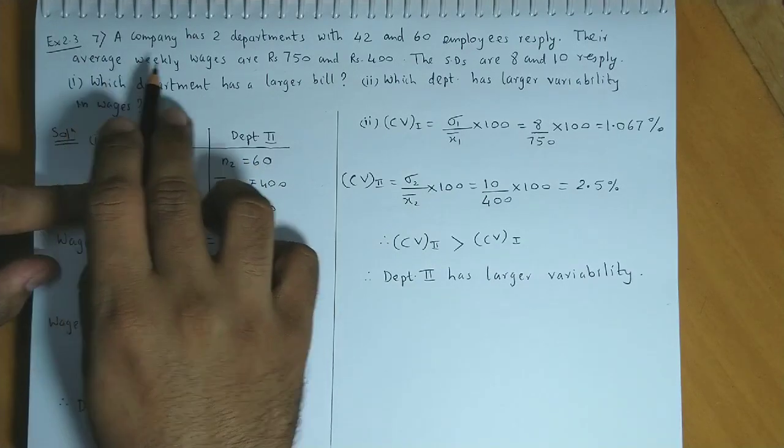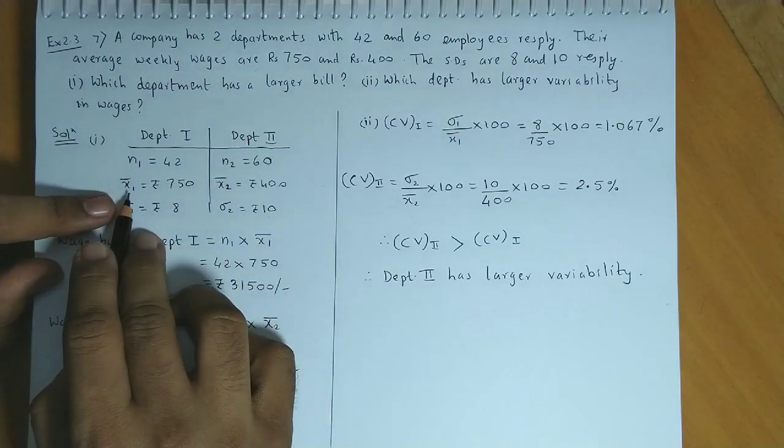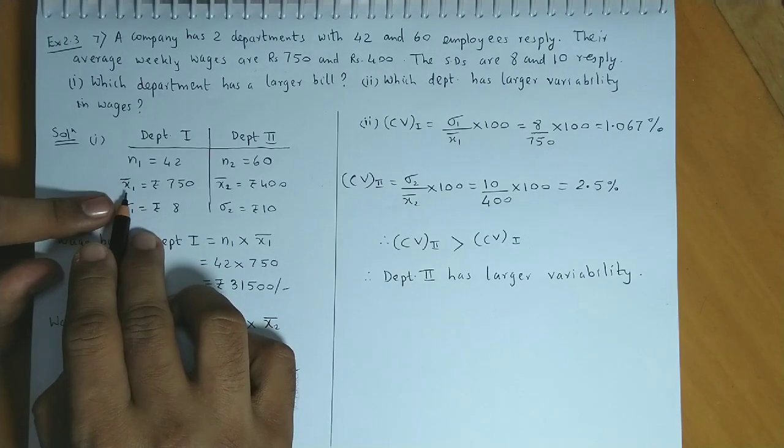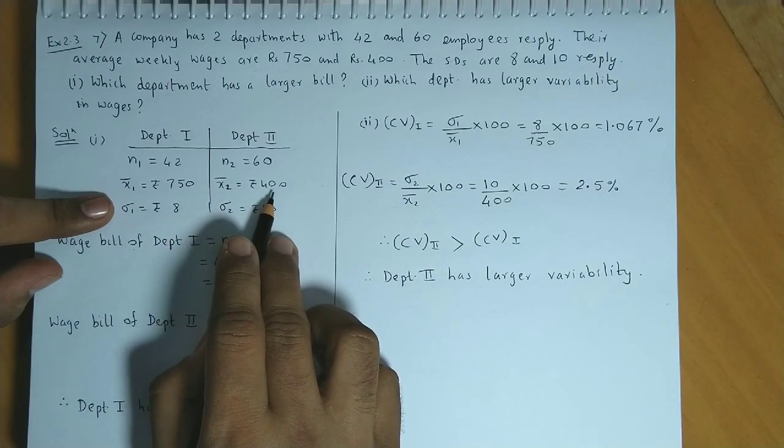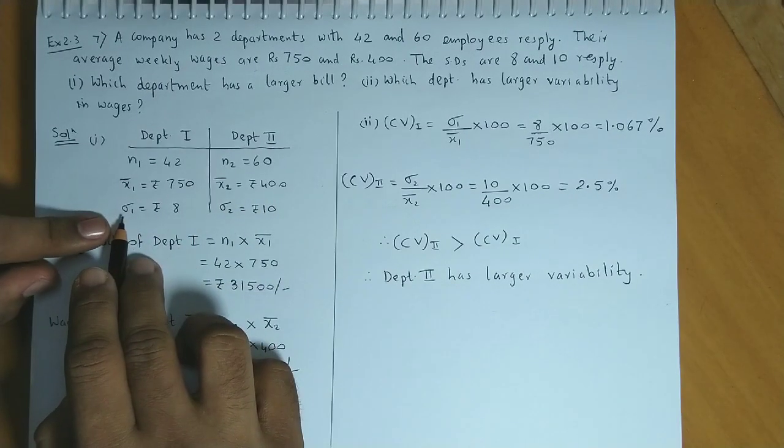Next, average weekly wages are denoted as x1 bar, that is 750, and x2 bar is equal to rupees 400. Finally, the standard deviations are given as 8 and 10, so sigma 1 is rupees 8 and sigma 2 is rupees 10.